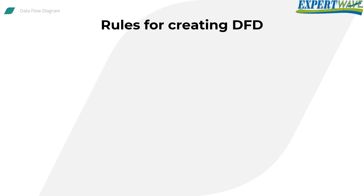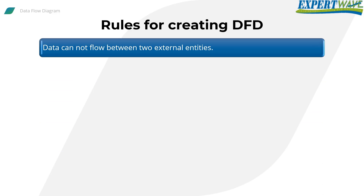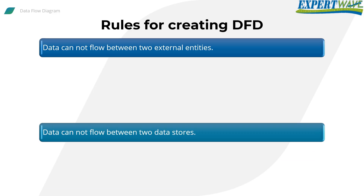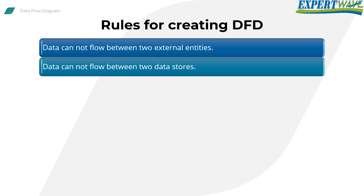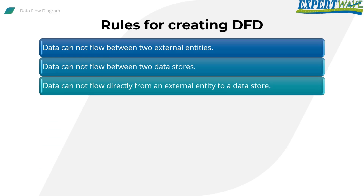There are several rules that we should follow when creating DFDs. Data cannot flow between two external entities; data flow must be from an external entity to a process or a process to an external entity, and there can be multiple data flows between one external entity and a process. Data cannot flow between two data stores; data flow must be from a data store to a process or a process to a data store. Data cannot flow directly from an external entity to a data store — it must be processed by a process before going to a data store and vice versa.